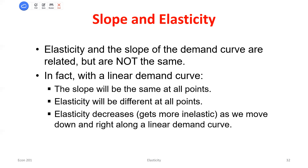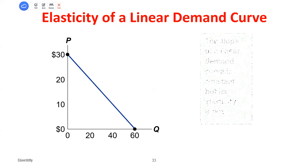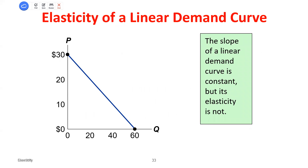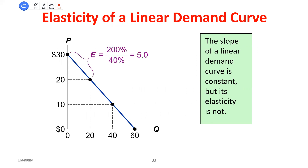At some point there will be where our elasticity equals 1, what we call the unit elastic point. This will become important for something we'll talk about in a bit. For a linear demand curve, I can derive the slope — if it goes from 30 to 0 on the price axis and 0 to 60 on the quantity axis, the slope is negative 30 over 60, or negative one-half. But that's not the same as my elasticity.